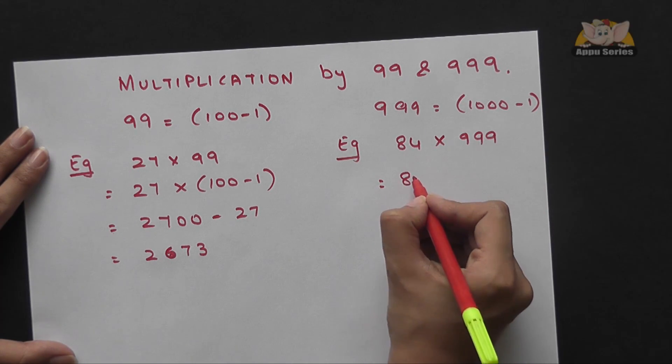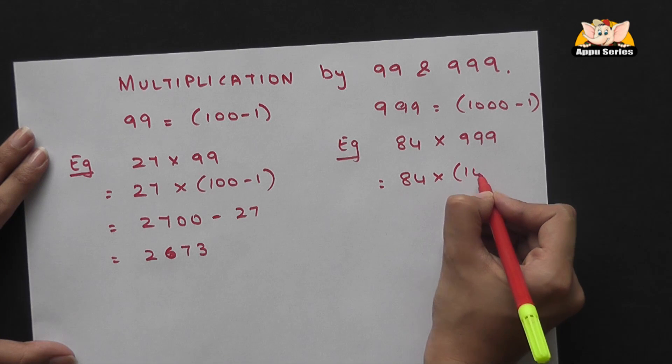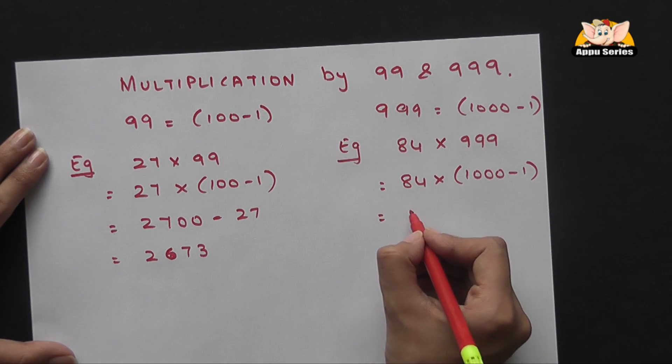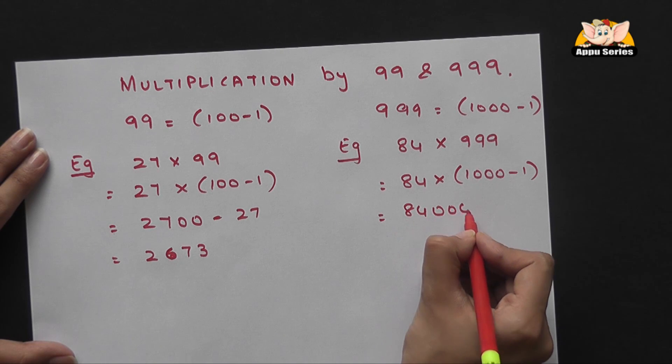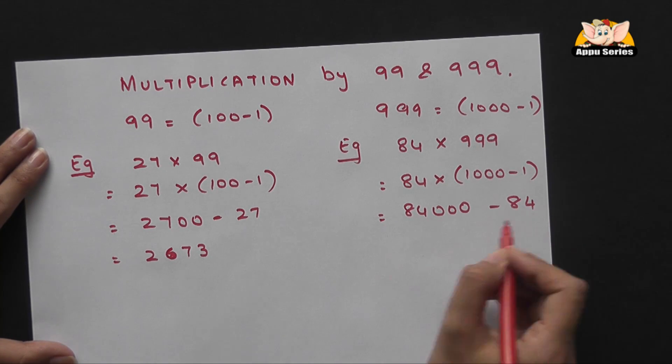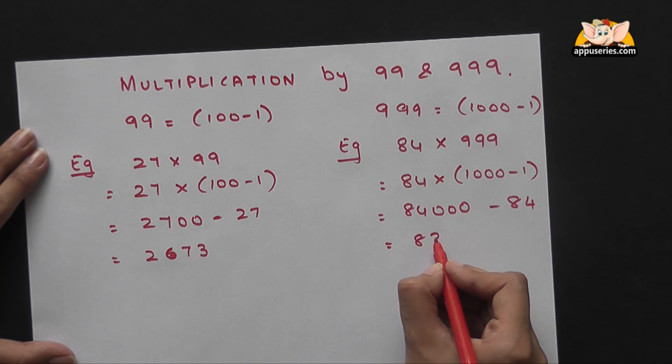Which is 84 into 1000-1. That is 84000-84. So your answer is 83916.